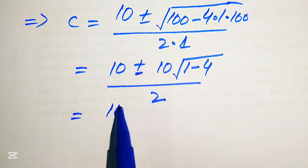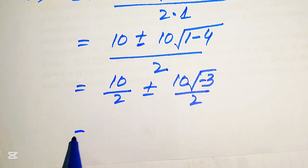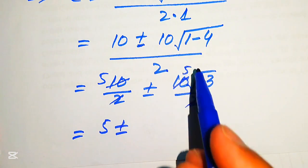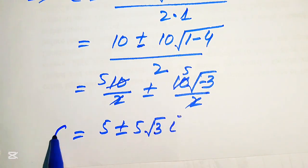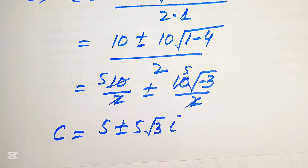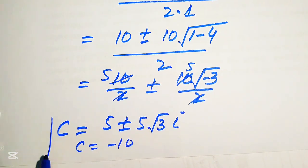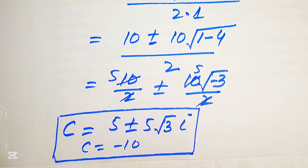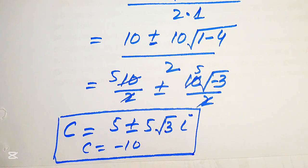Breaking this fraction gives 10 over 2 plus or minus 10 times square root of minus 3, divided by 2, which simplifies to 5 plus or minus 5 times square root of 3 times iota. These are the other two complex roots from equation number 2, giving three roots from case 2 as well. So from both cases we get 3 plus 3, giving 6 roots total for the given equation. This is our final answer. Thank you so much for watching this video — please subscribe to my channel for more exciting videos.